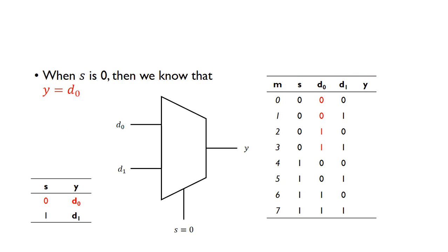From the design problem, when s is 0, we know that y equals d0. For the situations when s is 0, y is just going to equal d0, so we just copy those values here. That essentially means the multiplexer is connected via this side—we've routed d0 to the output y.